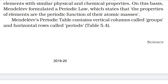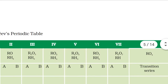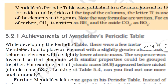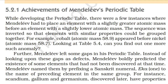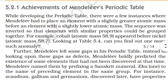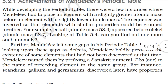The periodic table contains vertical columns called groups and horizontal rows called periods. Achievements of Mendeleev's Periodic Table: While developing the periodic table, there were a few instances where Mendeleev had to place an element with a slightly greater atomic mass before an element with a slightly lower atomic mass — the sequence was inverted so that elements with similar properties could be grouped together. For example, cobalt (atomic mass 58.9) appeared before nickel (atomic mass 58.7).